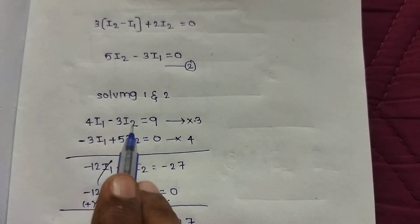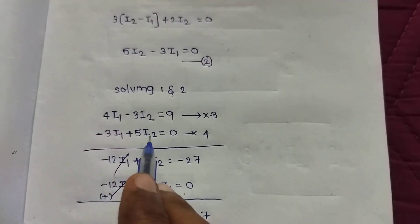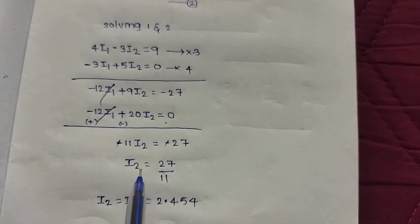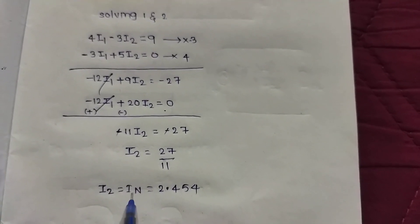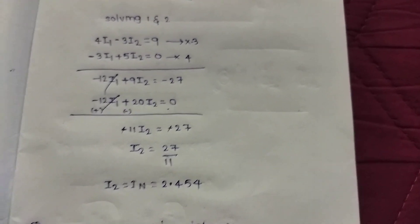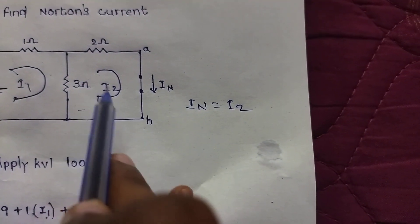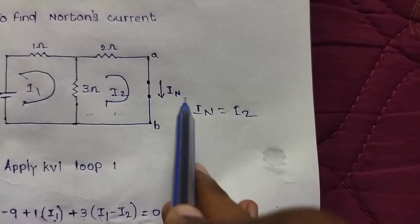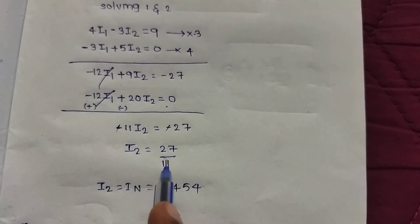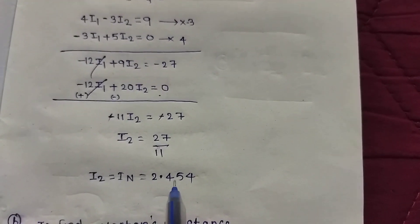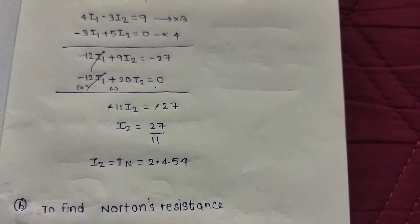Using the substitution method with the two equations — 4I1 minus 3I2 equals 9 and 5I2 minus 3I1 equals 0 — we solve for I2. Since I2 equals IN, Norton's current IN equals I2, which gives us the answer: IN equals 2.454 amperes.